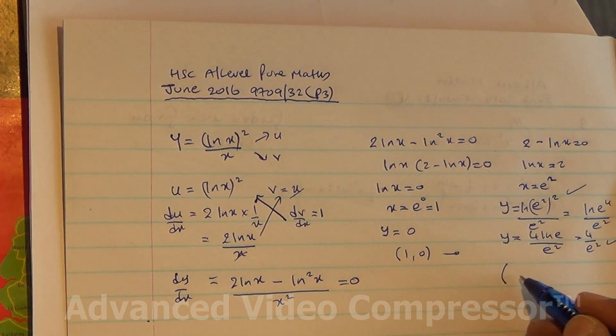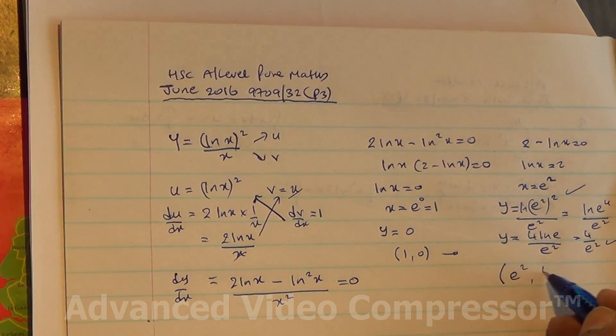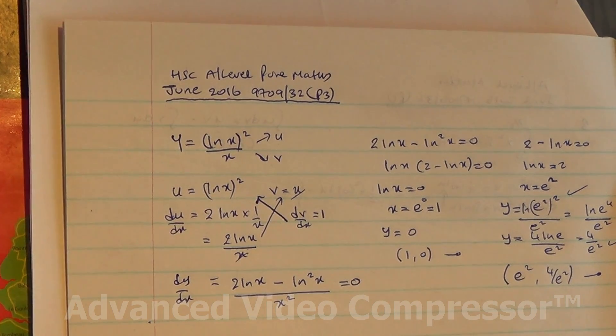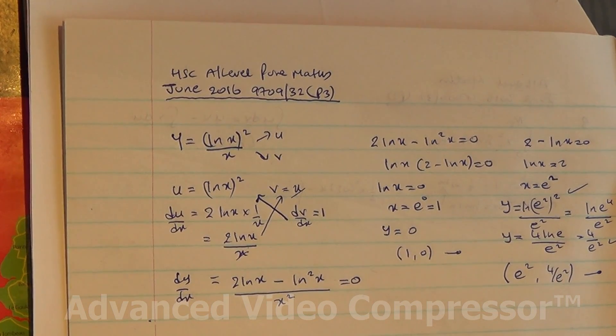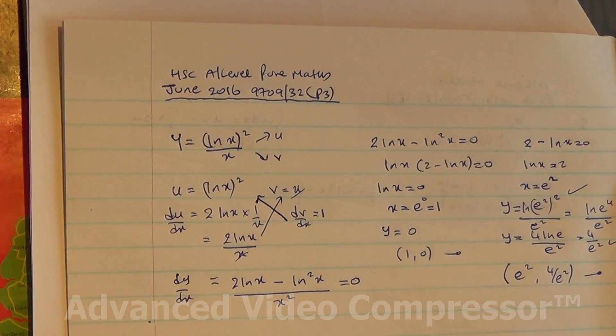Therefore, the second stationary point is (e², 4/e²). This question is from June 2016, Advanced Level Maths HSC P3. Thank you.